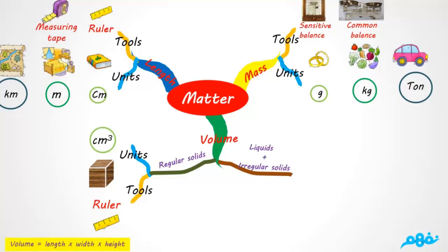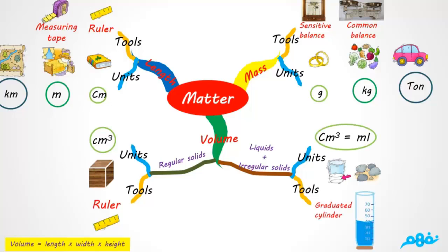To measure the volume of liquids and irregular solids like milk and stone, we use a graduated cylinder and the unit is cubic centimeter. Cubic centimeter and milliliter, where one cubic centimeter equals one milliliter, and we use the unit liter.